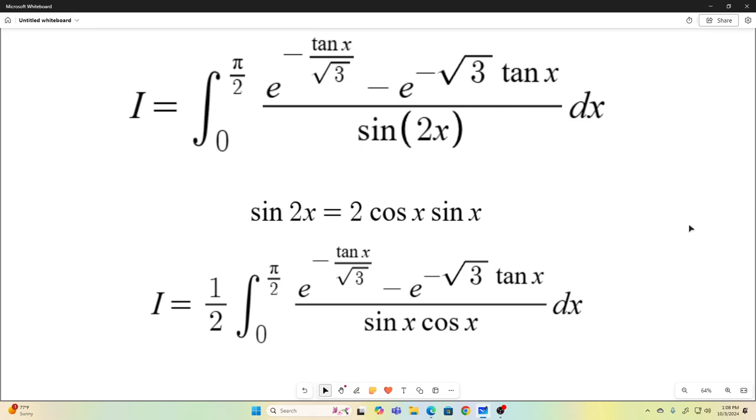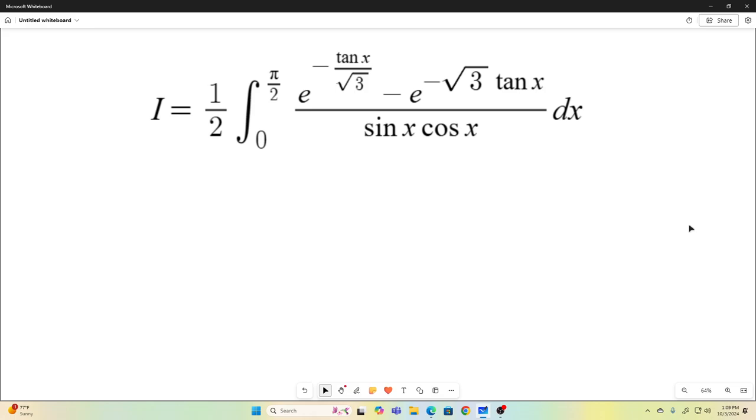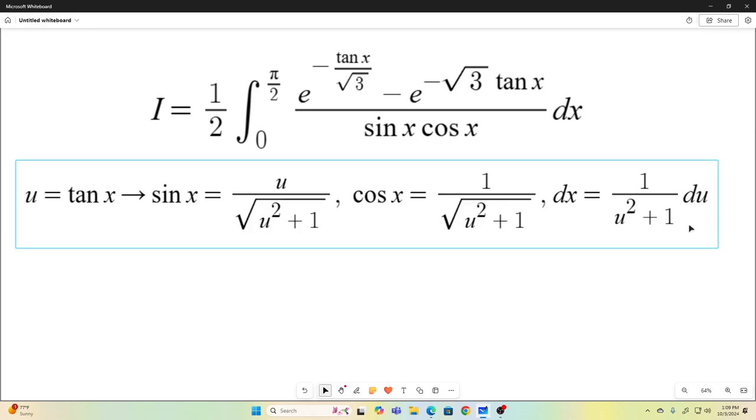Next, we're going to make the substitution that u equals tangent x. From u equals tangent x, you can build a triangle and find what sine x and cosine x are based on that. Then let x equal arctangent u to get dx equals 1 over u squared plus 1 du.